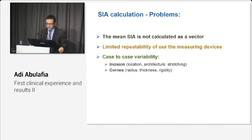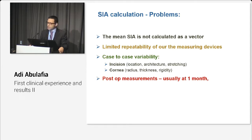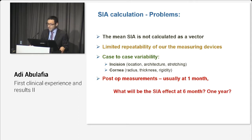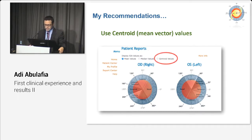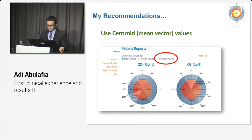Another issue is case-to-case variability. We usually take our post-op measurement one month following surgery, but what will the SIA effect be at six months or even one year? My recommendation is: if you are up to it, try to calculate your personal SIA using Warren Hill's SIA online calculator with the centroid value option. In the meantime, I think it's reasonable to use a low SIA value between 0 and 0.2 diopters if you use clear corneal incisions of 2.4 mm or below.